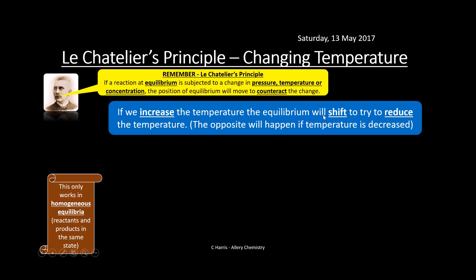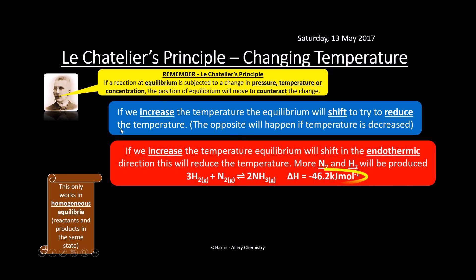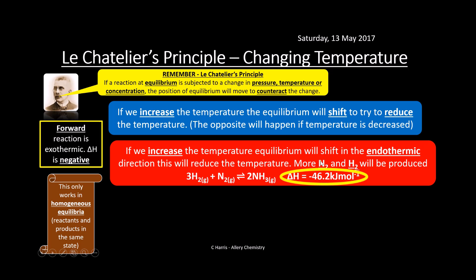Effect of temperature: if we increase the temperature, equilibrium shifts to try and reduce it — it shifts in the endothermic direction. In the Haber process the delta H value is negative, meaning the forward reaction is exothermic and the backward reaction is endothermic. Increasing temperature shifts equilibrium in the endothermic direction (backwards), so more N₂ and H₂ are produced.